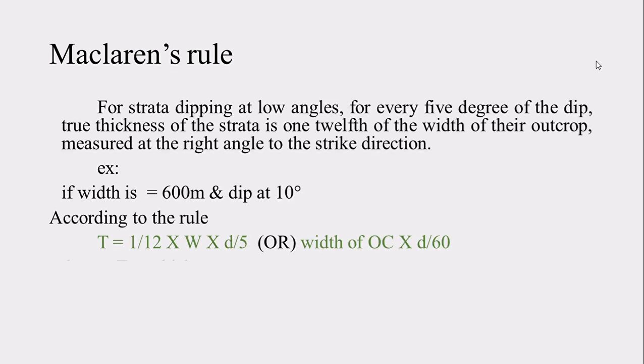The first heading is McLaren's Rule. This rule governs the relation between the width of the outcrop and the true thickness of the strata. So if you know the width of the outcrop, by using McLaren's Rule you can simply calculate the true thickness. Remember this rule is only for low dipping angles, say less than 30 degrees. According to this rule, for every 5 degrees of dip, the true thickness of the strata is one-twelfth of the width of the outcrop.